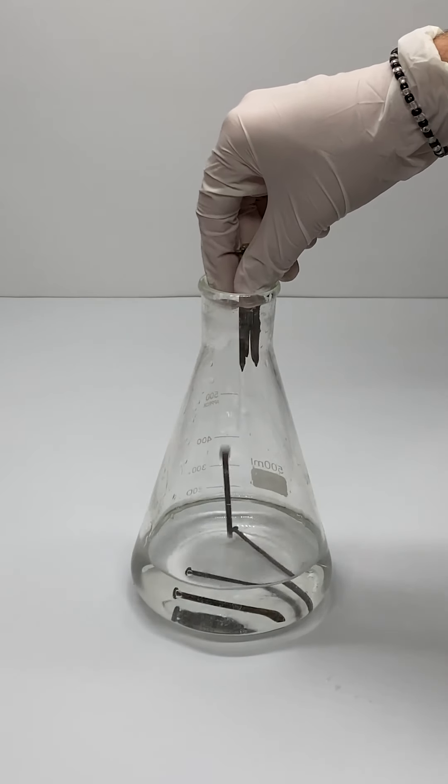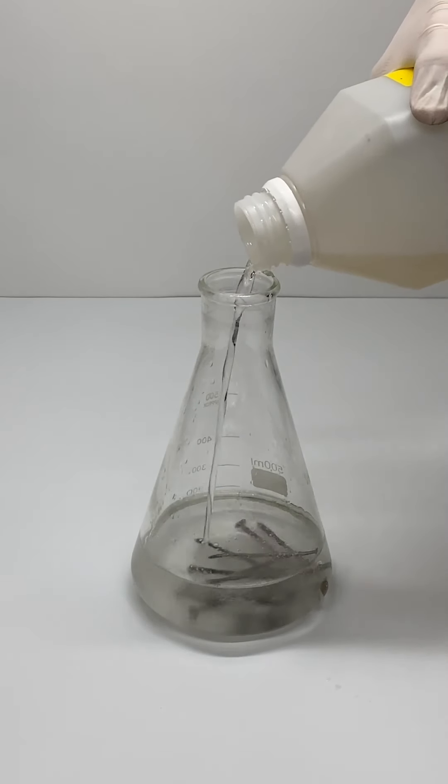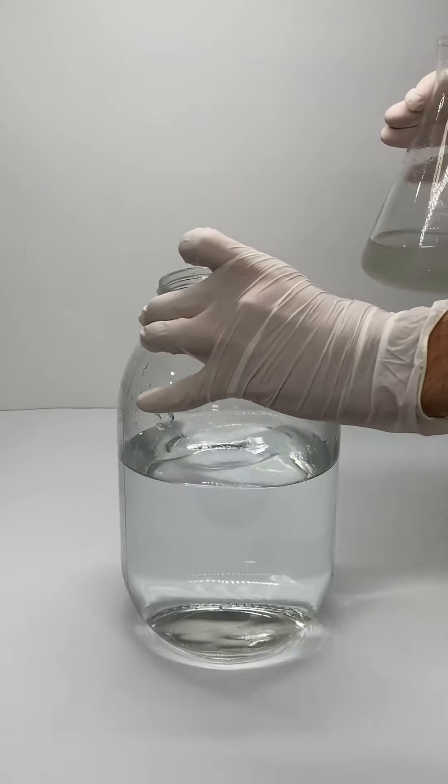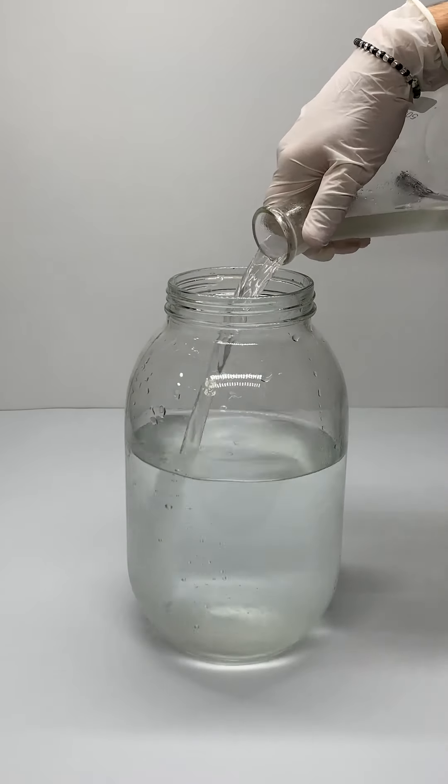I had some nails made of iron and I wanted to do something with them, so I put them in sulfuric acid. The iron reacts with the acid to produce iron sulfate.